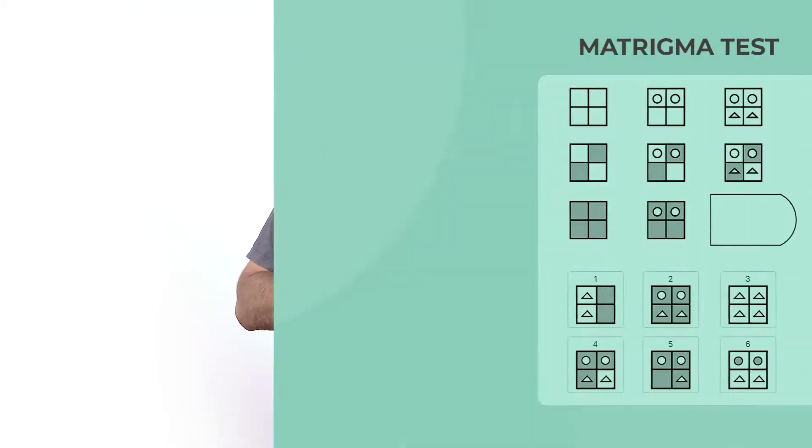The Matrigma test assesses your cognitive ability through abstract questions. In these questions you will need to find the underlying pattern in a series of images and pick the one that completes it. The test is especially popular in Sweden, although its non-verbal nature has made it popular all over the world.